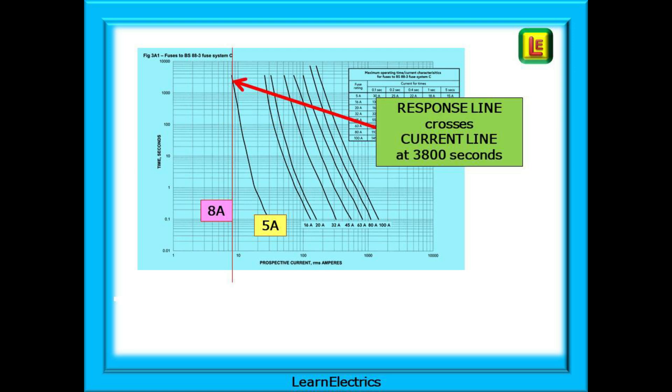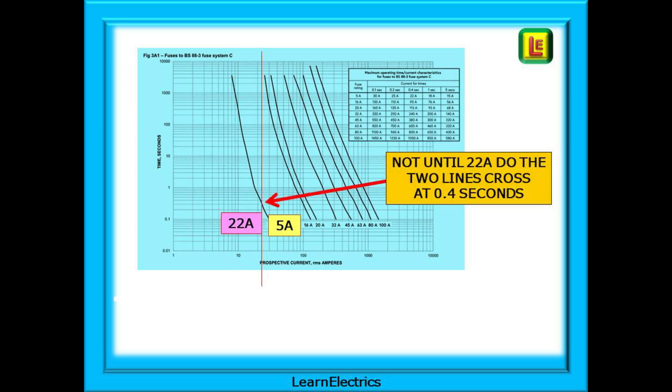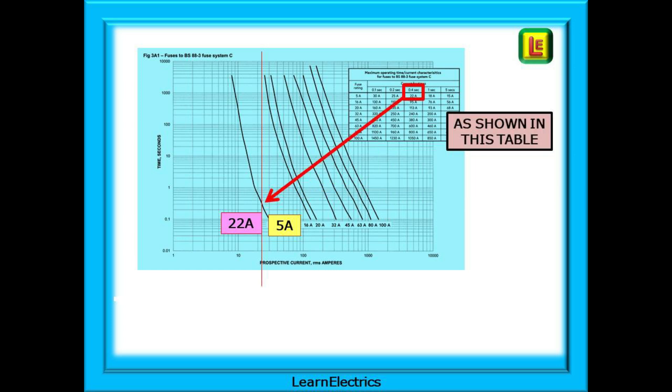If the fault current was 8 amps for the same 5 amp fuse the lines will now cross. Reading off the seconds on the left at the point where they cross we have 3800 seconds. This is just over an hour before the fuse blows. Whoever is hanging on to that live wire is long dead by now. Not until the two lines cross at 22 amps of fault current do we have a disconnection time of 0.4 seconds. And this same 22 amp figure is given in the table at the top right of the chart. 5 amps will not blow a 5 amp fuse and we need at least 22 amps of fault current to cause the fuse to blow within 0.4 seconds.